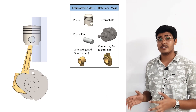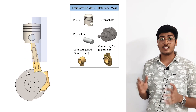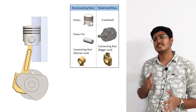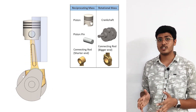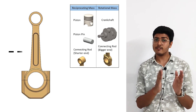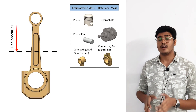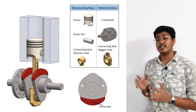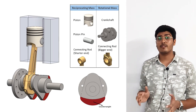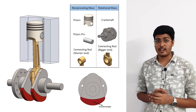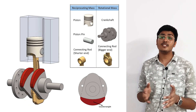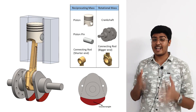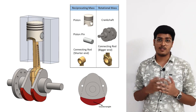The middle part of the connecting rod experiences both rotational and reciprocating motion. So for simplifying the engine balancing calculation, we generally consider a part of the connecting rod as a reciprocating mass and the other part as a rotational mass. The rotational mass is balanced with the counterweight on the opposite end of the crankshaft, and the major imbalance is created due to the reciprocating mass of the piston. So let's calculate the forces associated with the reciprocating mass.